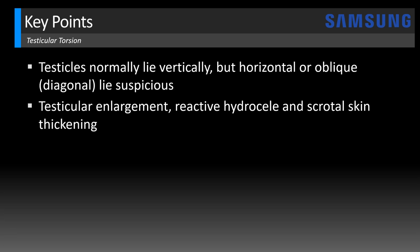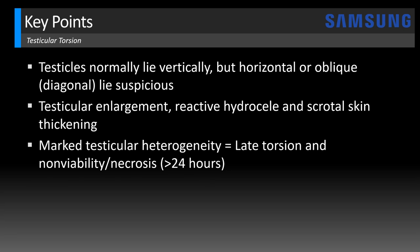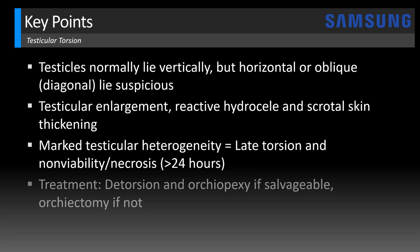Other secondary findings commonly seen are testicular enlargement, reactive hydroceles, and scrotal skin thickening. If you see marked testicular heterogeneity, that's usually a finding of late torsion and suggests non-viability or testicular necrosis, typically seen after 24 hours of torsion. The treatment is detorsion and orchiopexy if blood flow returns and the testis is deemed salvageable; otherwise orchiectomy with testicular removal may be required.